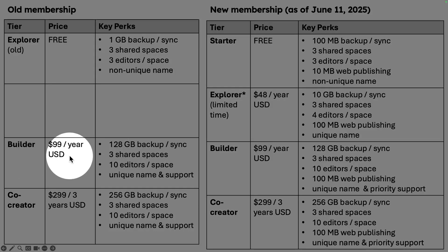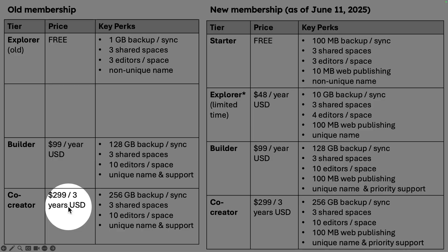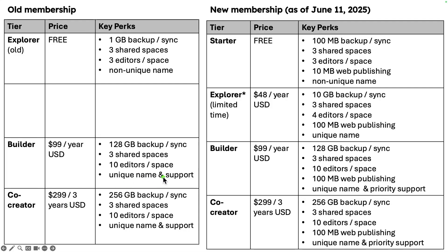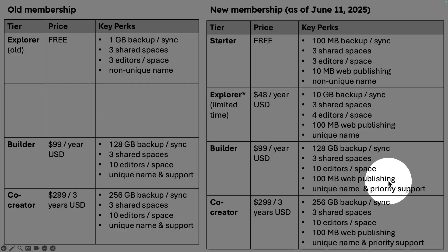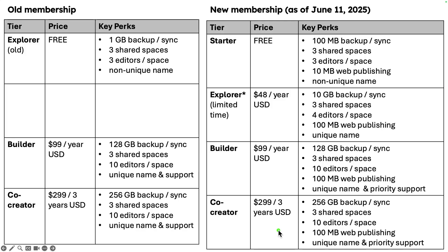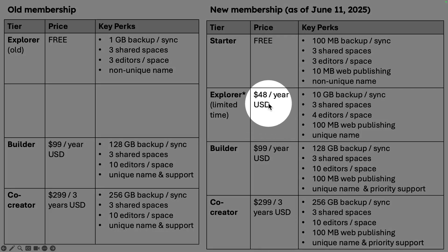For the Builder and Co-Creator plans, it's $99 per year and $299 for three years — nothing has really changed with those. What I've seen in the community is that people would like a higher storage limit for web publishing, maybe as a separate add-on. All of these plans — the $48, $99, and $299 — are one-time payments. They currently don't have monthly options yet, but it does seem like they will eventually have that.